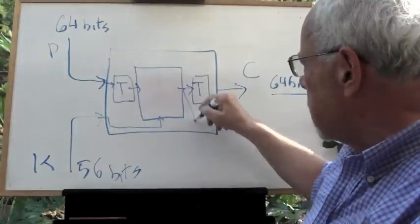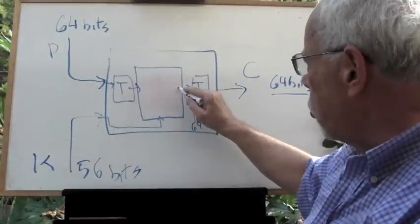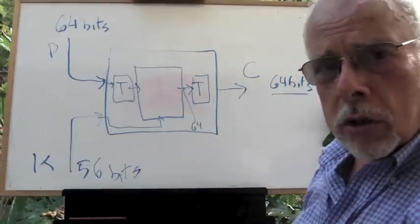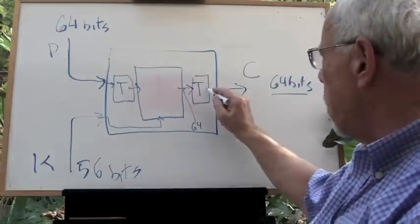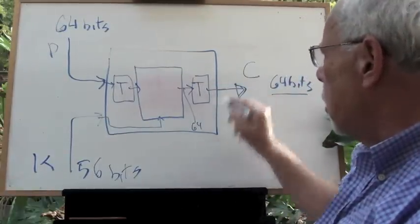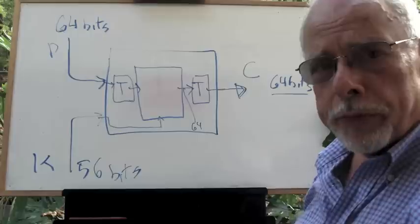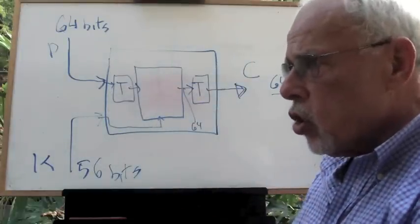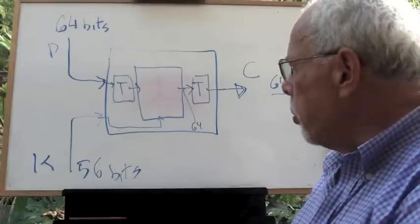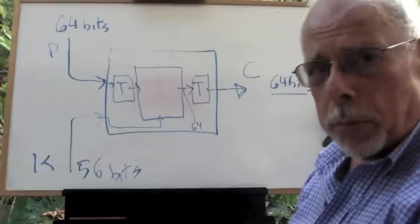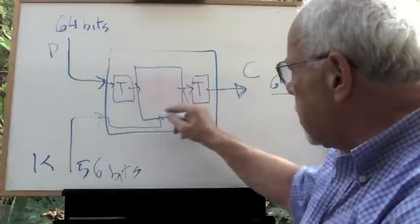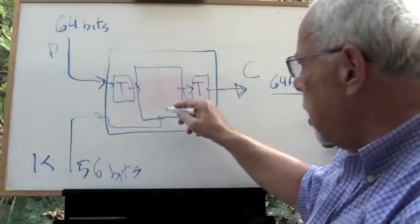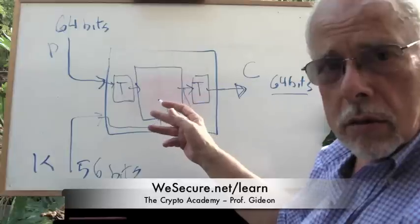And the result is 64 bits that get out of this main sub-module into the transposition sub-module. So that is the first layer: two modules of transposition in which we just change the order of the bits. The key doesn't play any role, and a sub-module that uses the key.